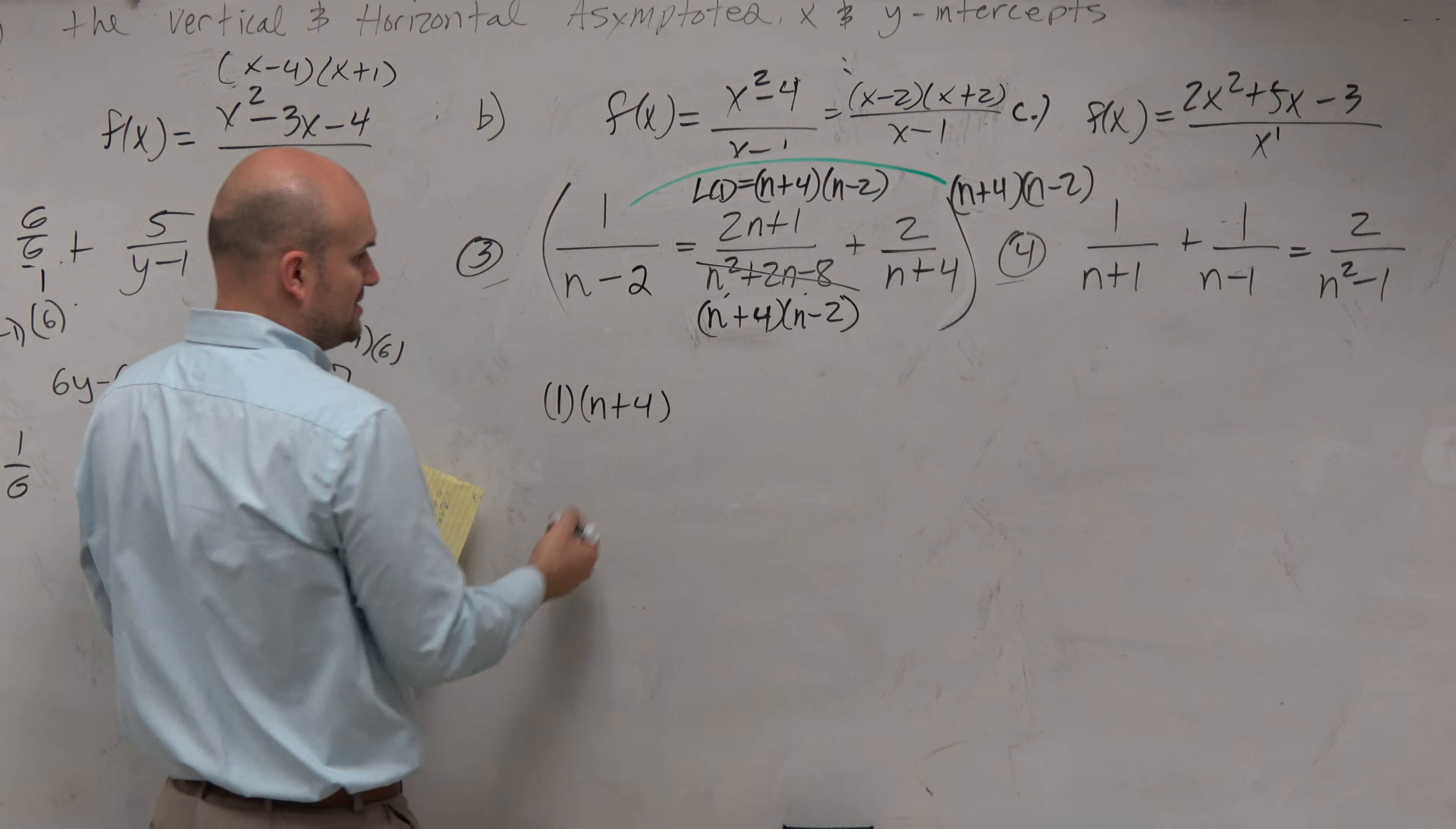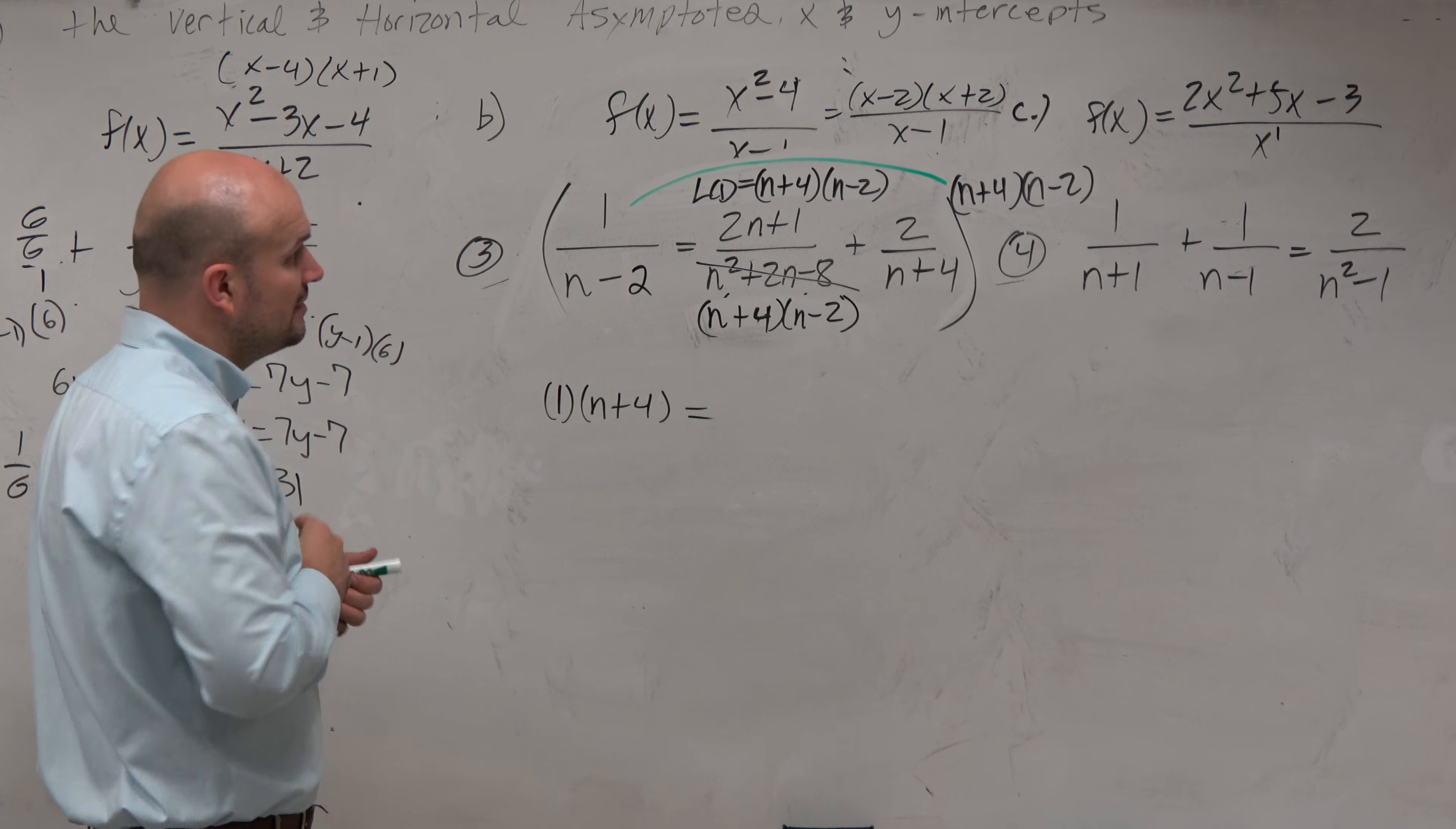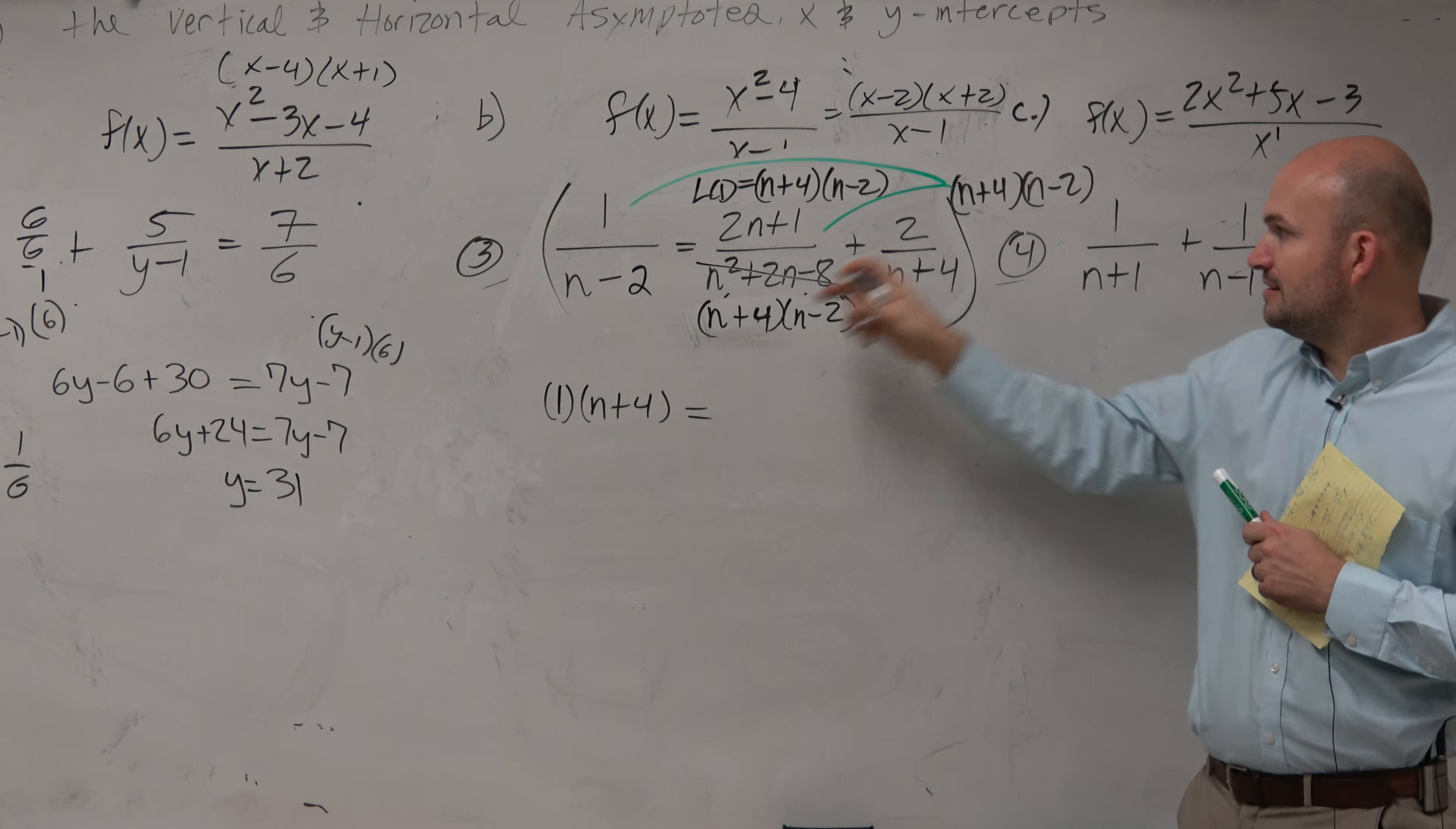Now, instead of writing it out, we are going to show this using some distributive property lines. So if I multiply n plus 4 times n minus 2, you guys can see that the n minus 2 divides out because that's in the denominator. That's in the numerator, right? Terms are separated by multiplication.